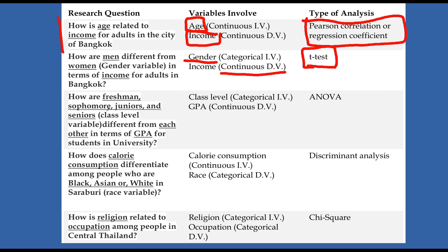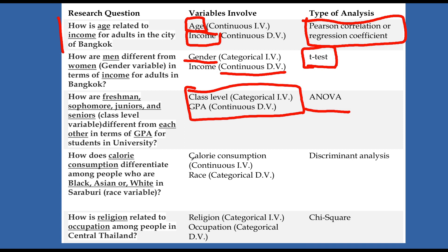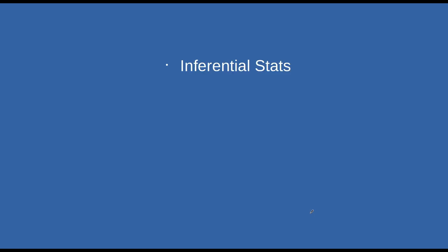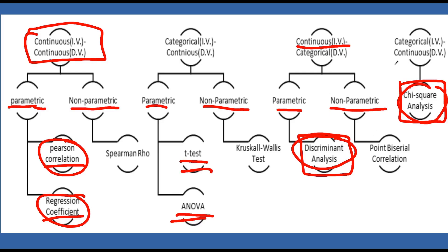The next one looks at how freshmen, sophomores, and juniors differ — more than one category. We have the same idea as the previous question, but now we're going to approach that with ANOVA because ANOVA is used when you have multiple groups as your categorical variable. Then: how does calorie consumption differentiate among people of different races? Calorie consumption is a continuous variable and we're trying to explain differences in race — that's a discriminant analysis situation. And how is religion related to occupation? Two categorical variables — that's chi-square.